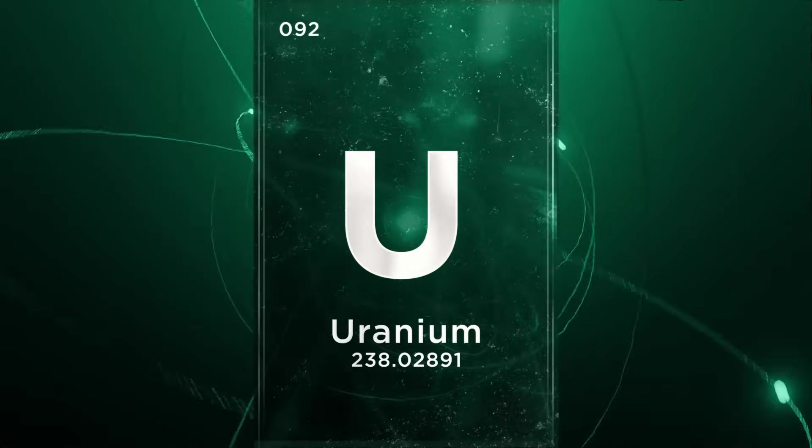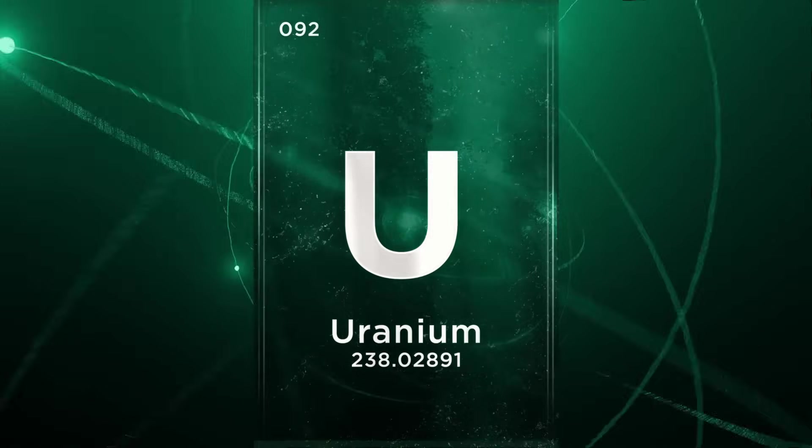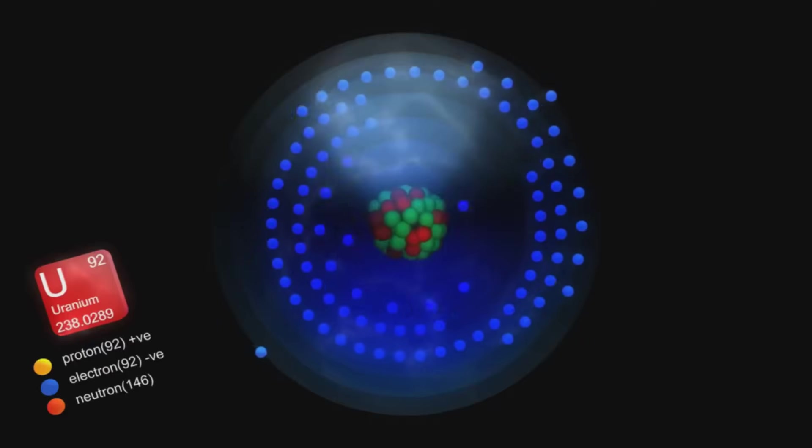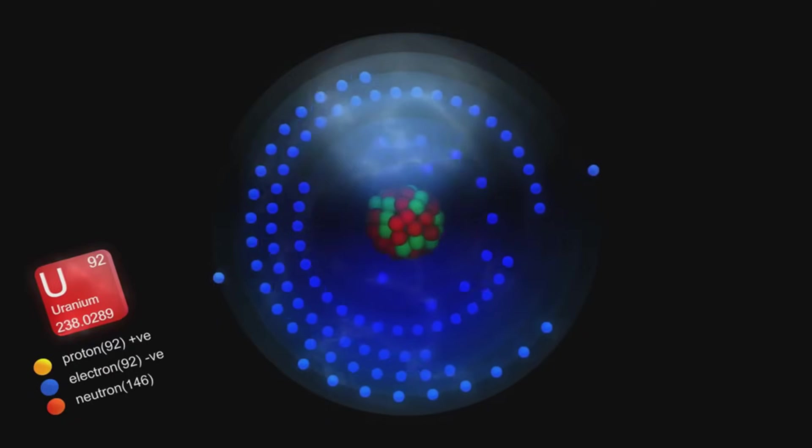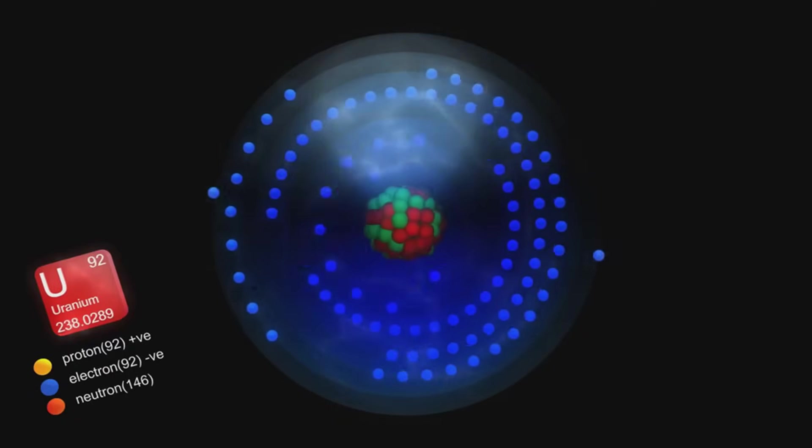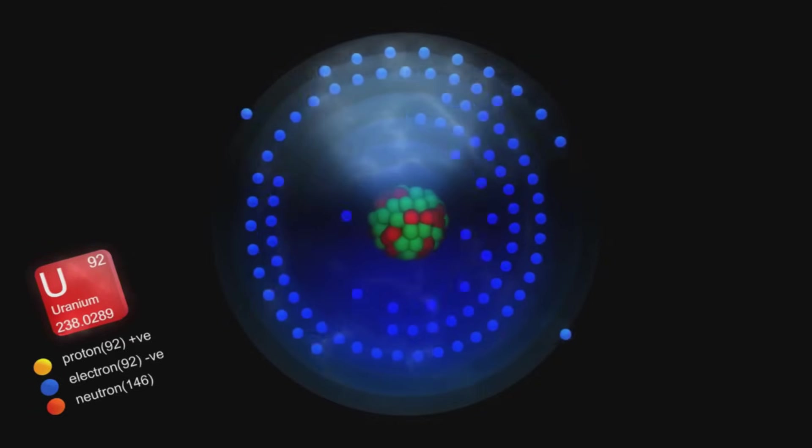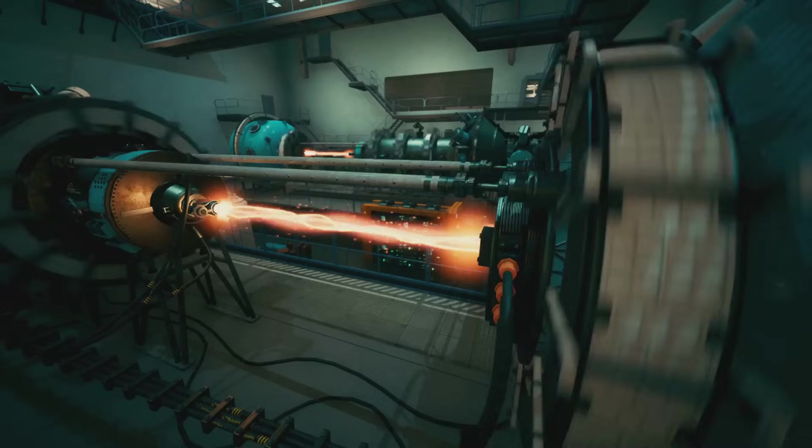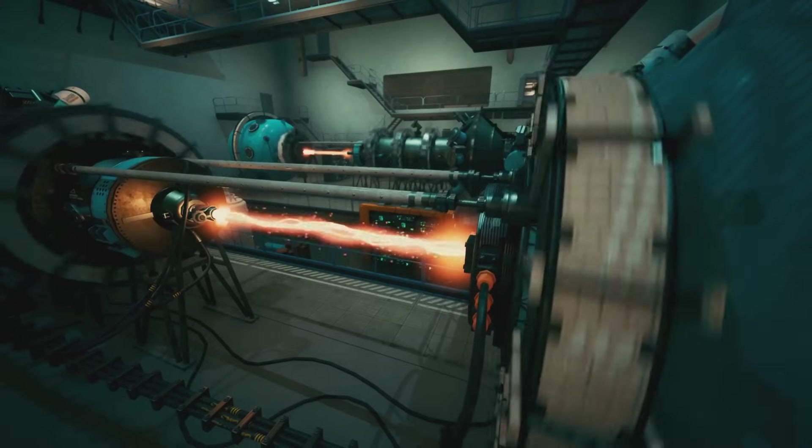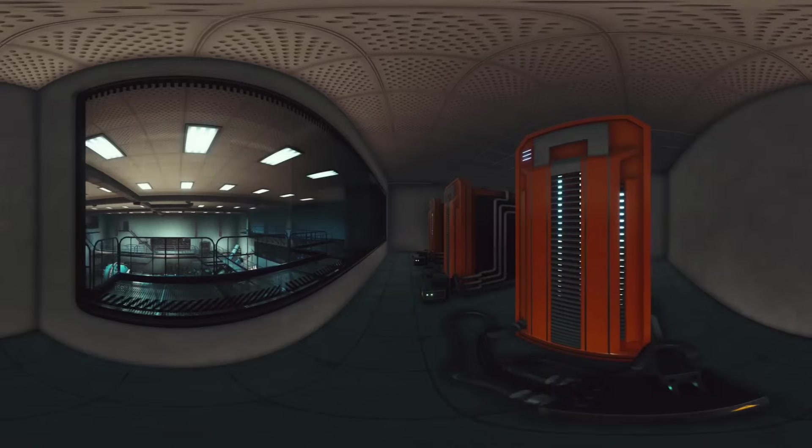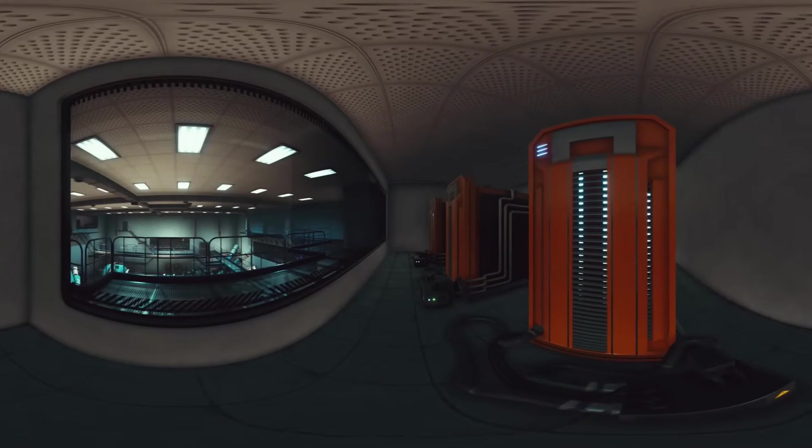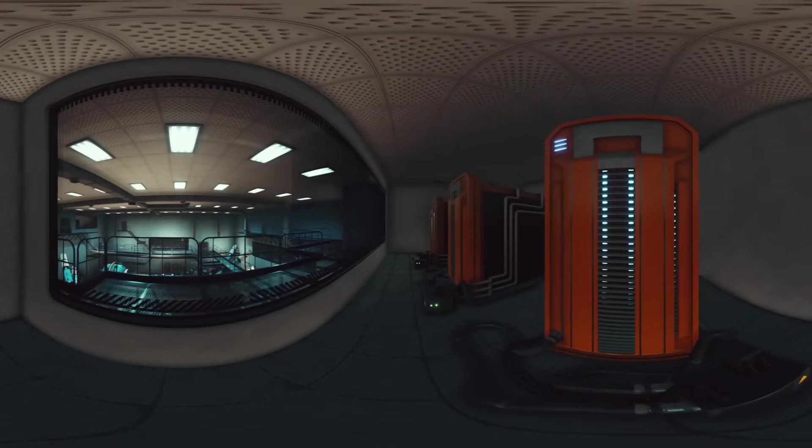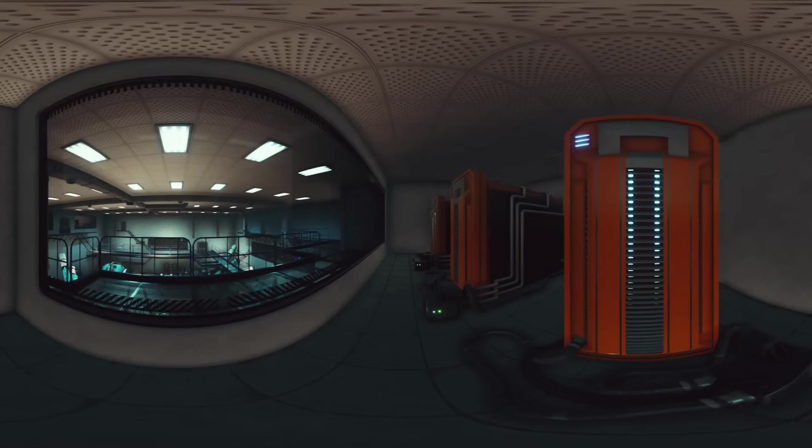So we have our big, wobbly uranium atom. Imagine it, a dense core packed with an incredible amount of energy, just waiting to be unleashed. This energy is what binds the nucleus together, a powerful force at play. To release that energy, to tap into this atomic reservoir, we use a neutron, one of the neutral particles residing inside the nucleus. It's a fundamental building block of matter, carrying no electrical charge.